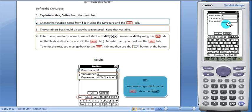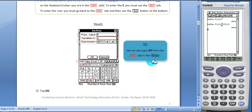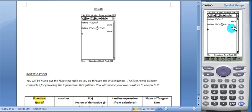Keep x the same and we want to enter D-I-F-F. And then f of x, comma, x. Tap OK. And we have our resulting definition.